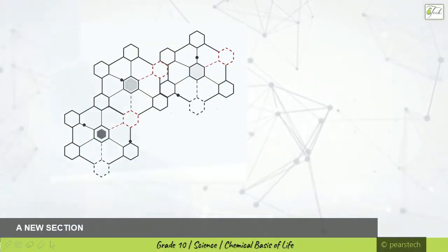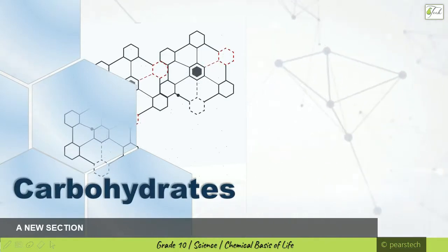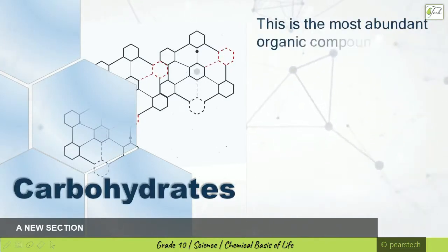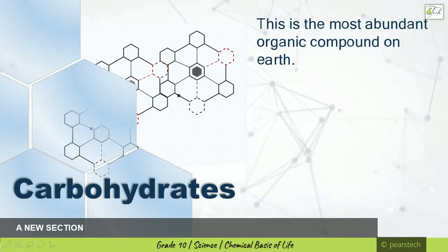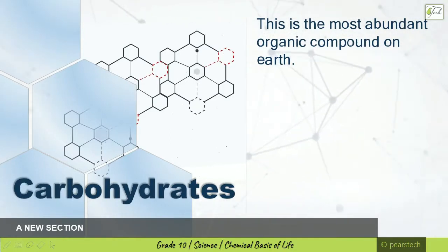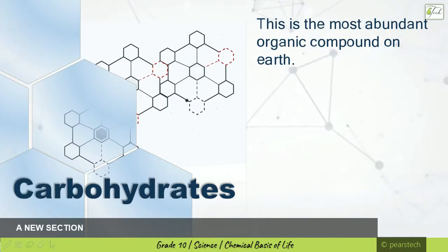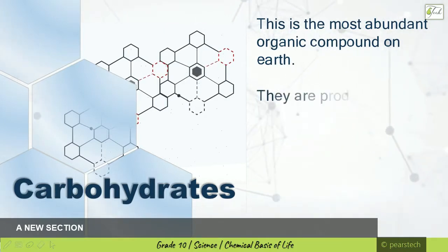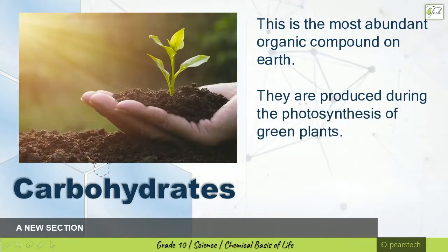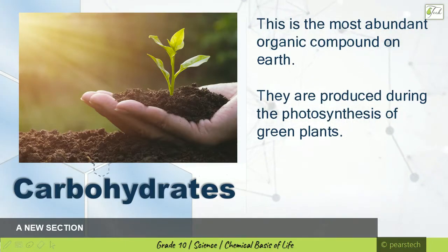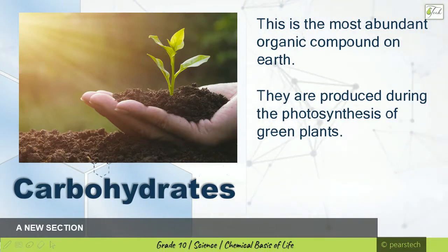Carbohydrates are the most abundant organic compounds on Earth. They are definitely a biomolecule and an organic compound. They are so abundant because they are produced during the photosynthesis of green plants. The number of plants, when compared to other organisms, is very much higher.